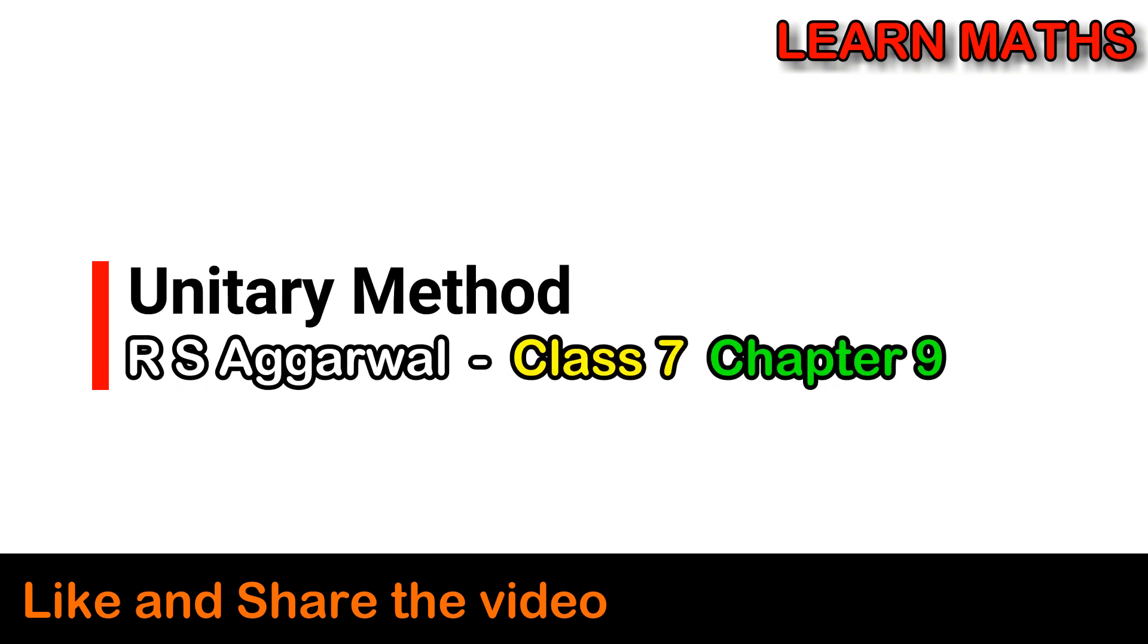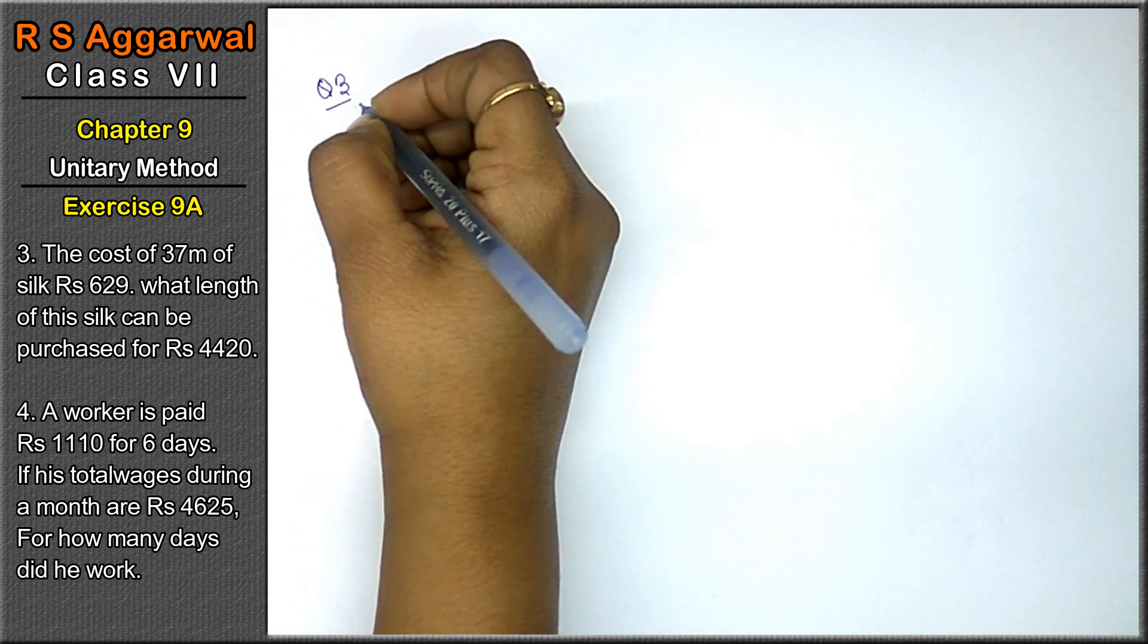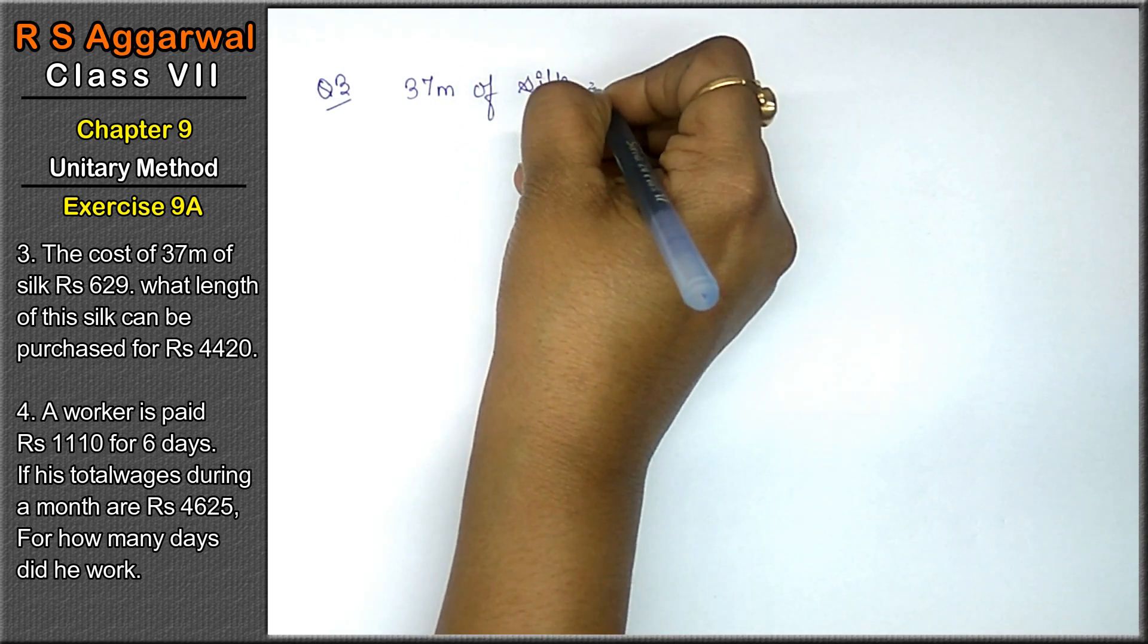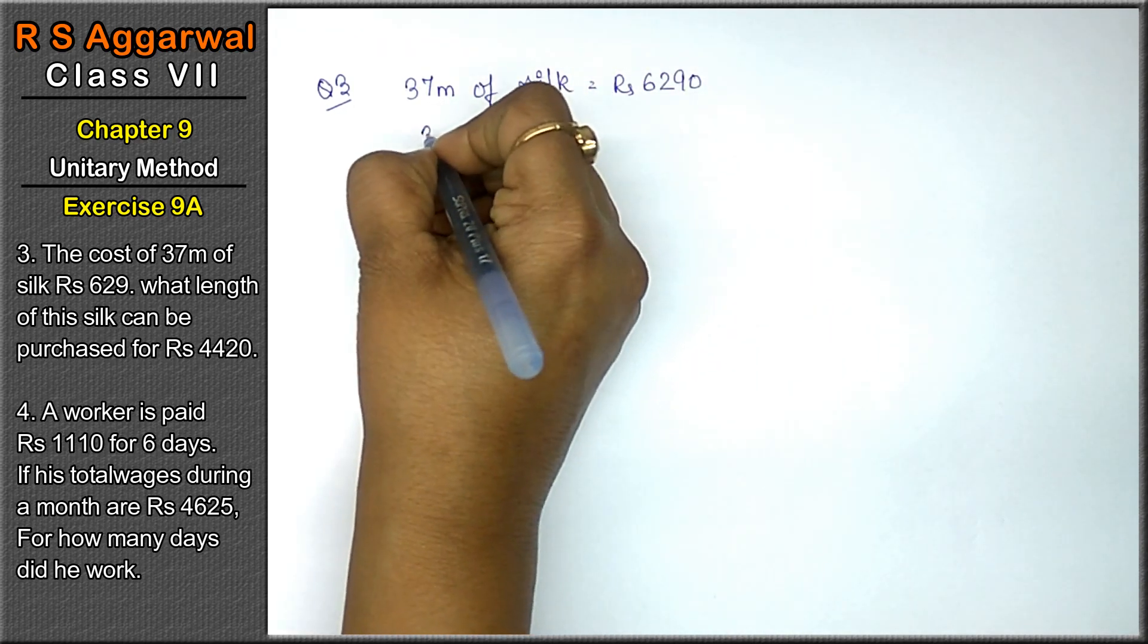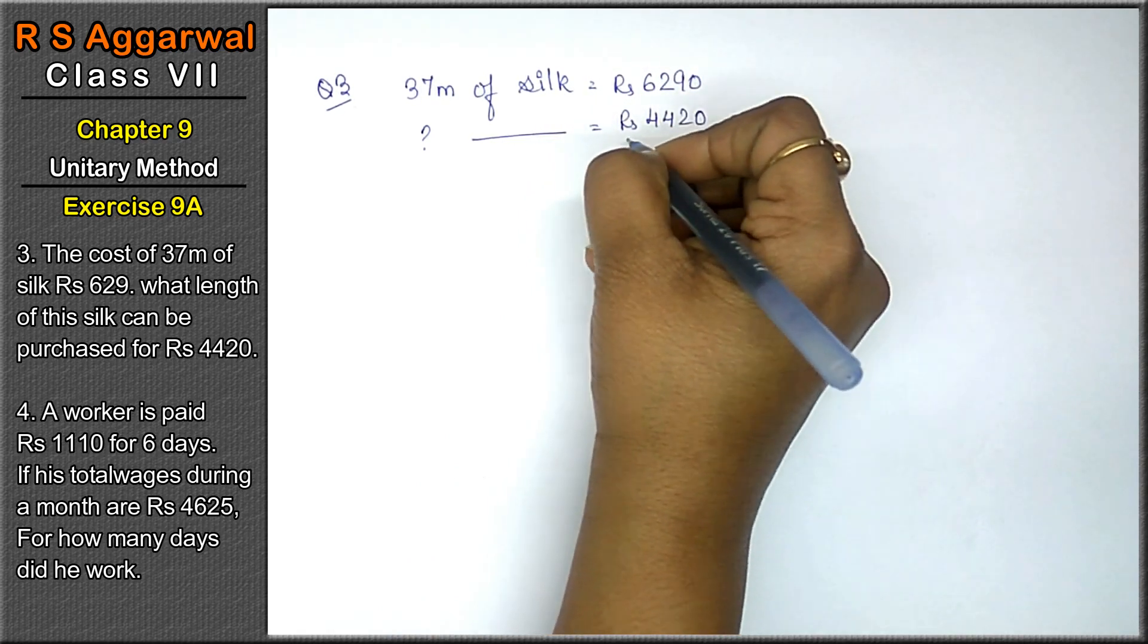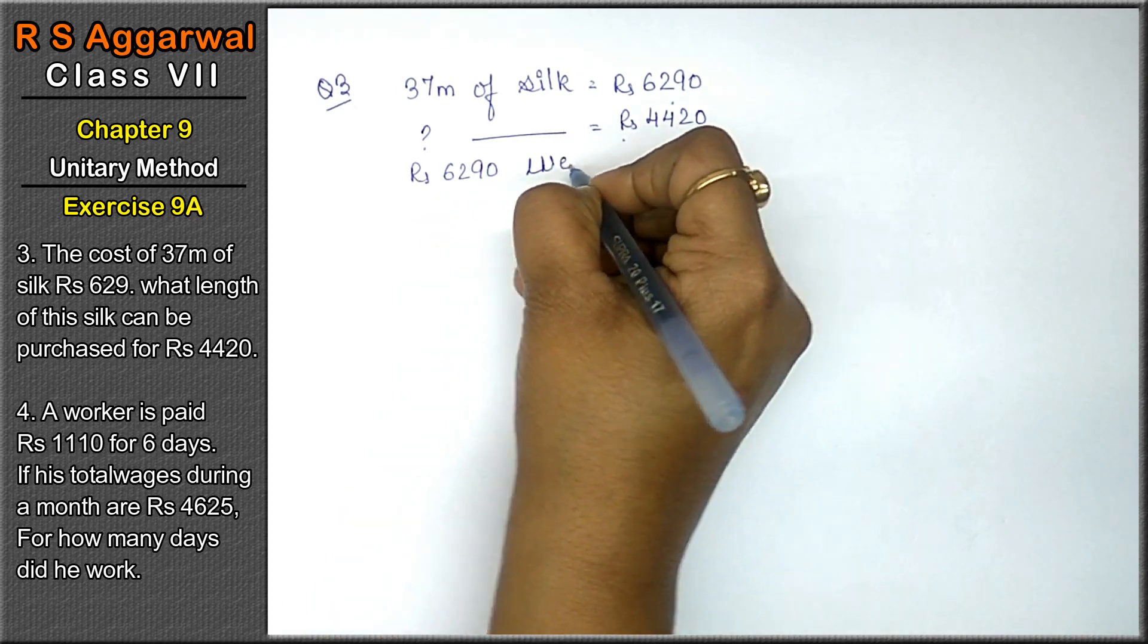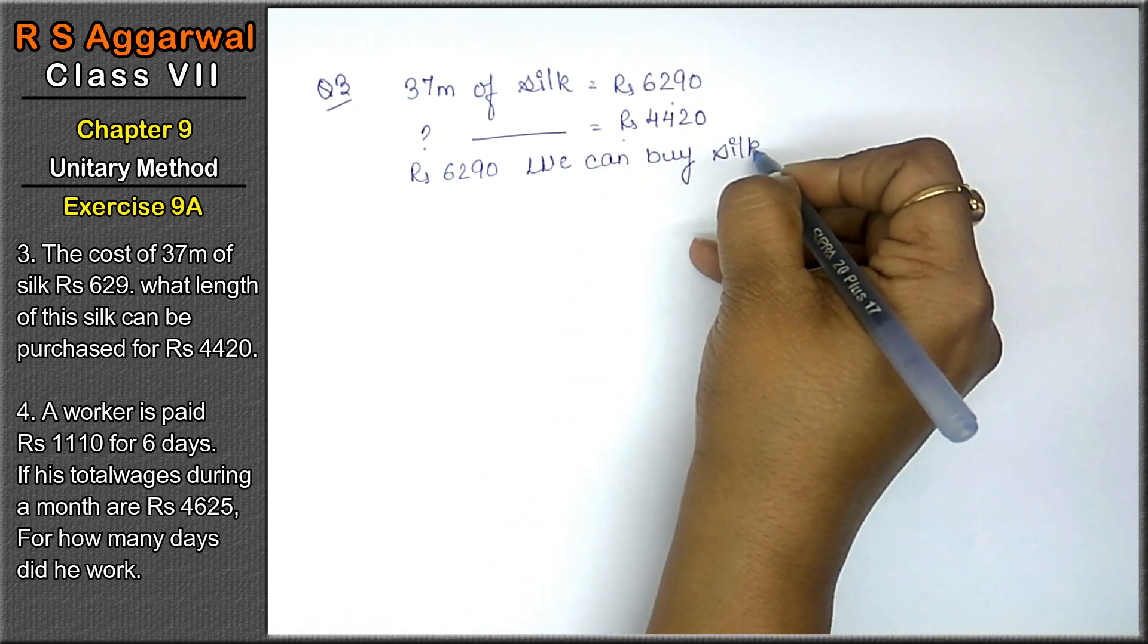Let's do question number third of chapter unitary method exercise 9A. Question number third is the cost of 37 meter of silk. The cost of 37 meter of silk is rupees 26290 and we have to find out the length of silk that can be purchased for rupees 4420. We will solve it inversely: rupees 26290 में we can buy silk equals to 37 meter.